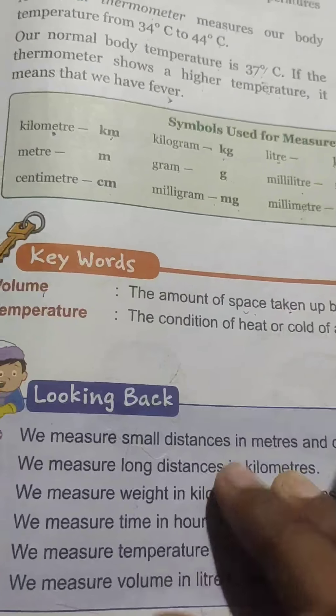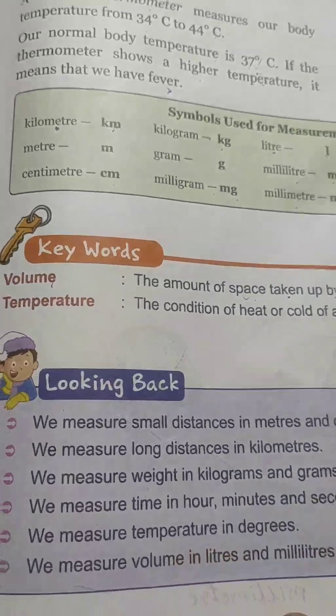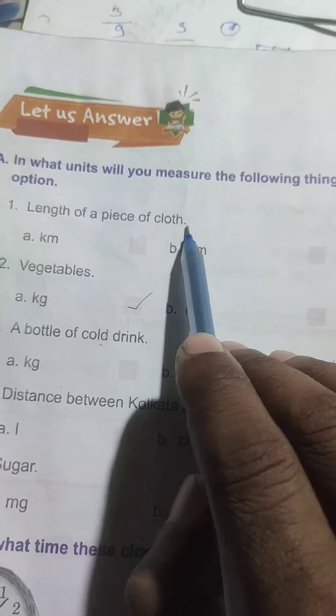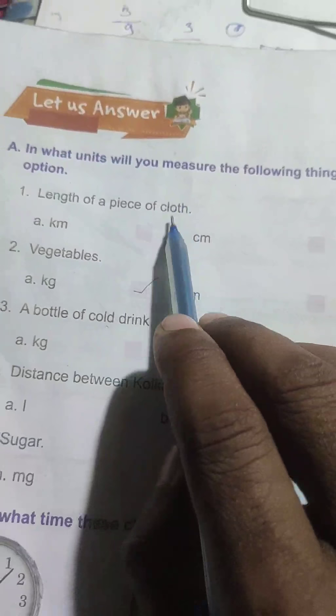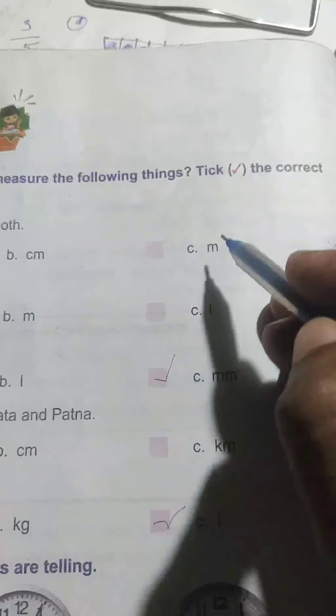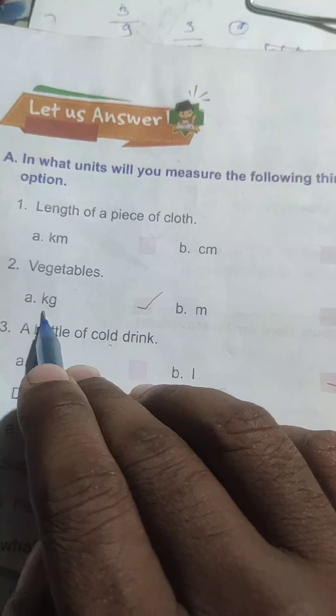Question answers मैं आपको इसी period में send करने वाला हूँ — यह video देखने के बाद आपको question answers fill करने हैं, यह बहुत easy हैं। In what units will you measure the following things — tick the correct option: length of a piece of cloth — मतलब cloth की length किससे measure करोगे — kilometer, centimeter और meter — तो सही option है meter। उसके बाद vegetables — vegetables आप kilogram में measure करते हैं।